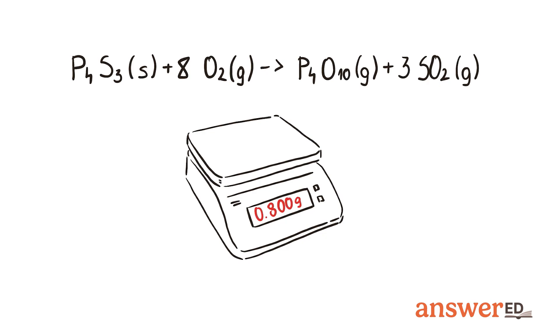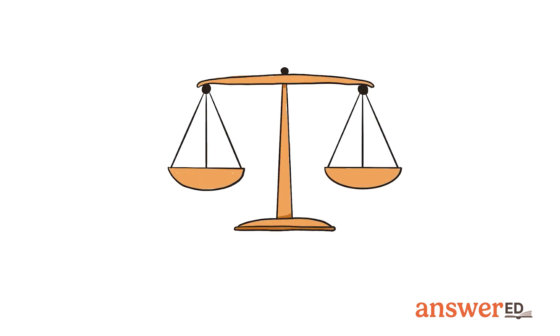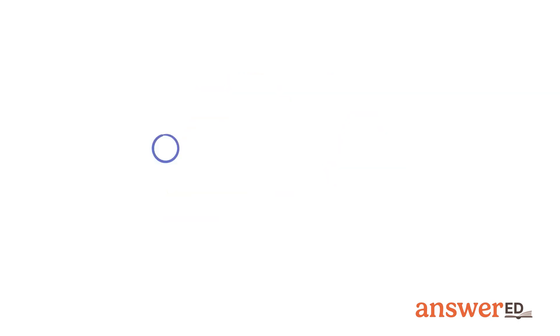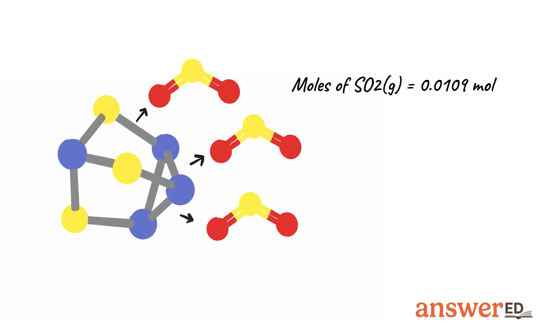We aim to calculate the volume of sulfur dioxide formed from 0.800 grams of the reactant. We find the moles of the reactant tetraphosphorus trisulfide using the stoichiometry of the reaction, then calculate the moles of sulfur dioxide. One mole of tetraphosphorus trisulfide gives 3 moles of sulfur dioxide.